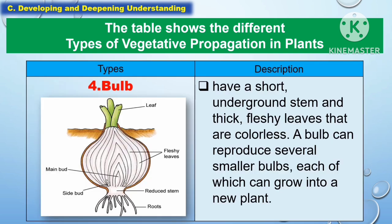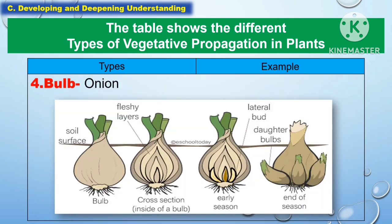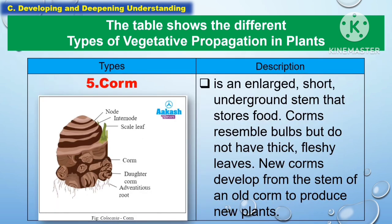Another type of vegetative propagation in plants is the bulb. A bulb has a short underground stem and thick, fleshy leaves that are colorless. A bulb can reproduce several smaller bulbs, each of which can grow into a new plant. An example is onion. Another type is the corm — an enlarged, short underground stem that stores food. Corms resemble bulbs but do not have thick or fleshy leaves. New corms develop from the stem of an old corm to produce a new plant.